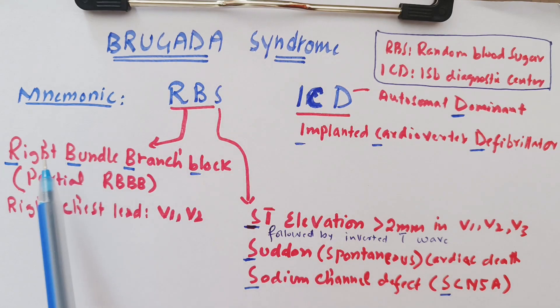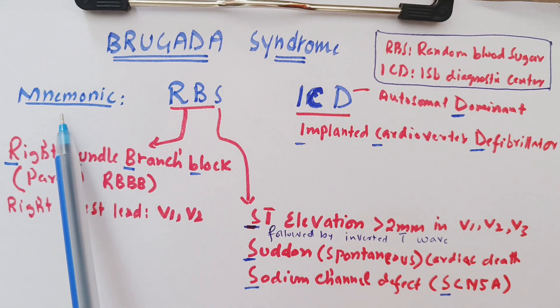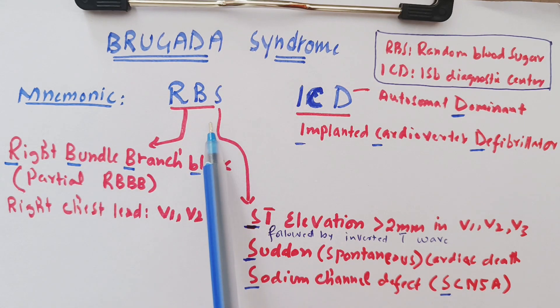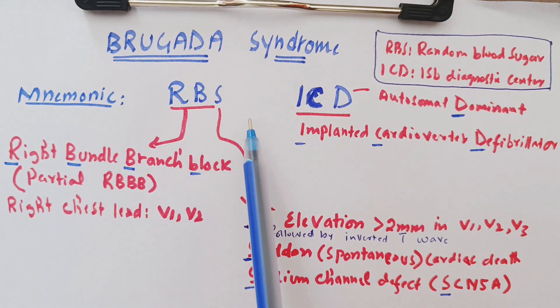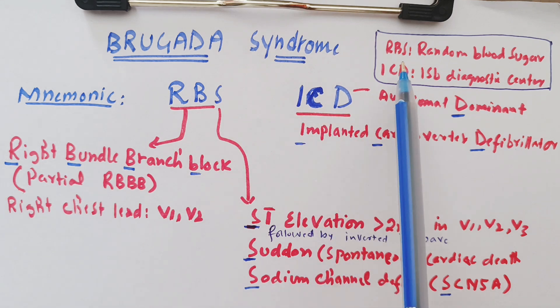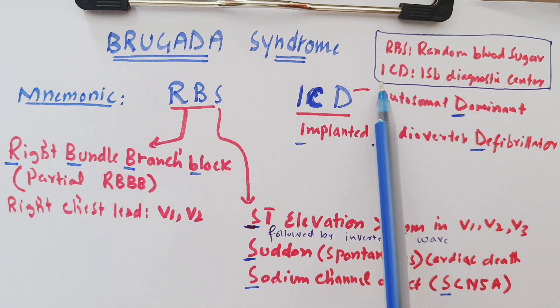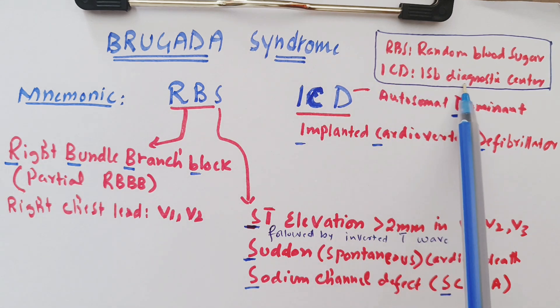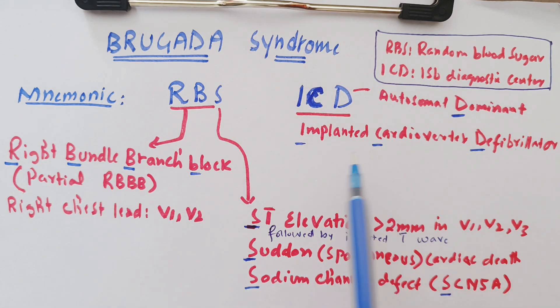Let's talk about Brugada syndrome. The mnemonic here is RBS ICD — do RBS ICD. RBS means random blood sugar, and ICD means international diagnostic center — but these are just the mnemonic hooks.